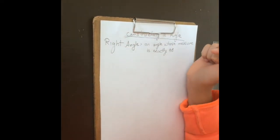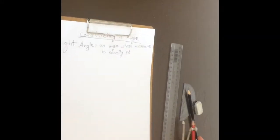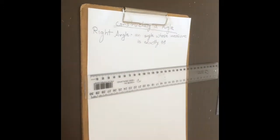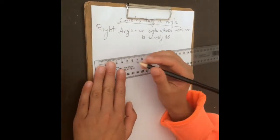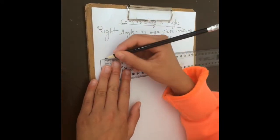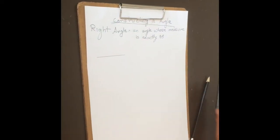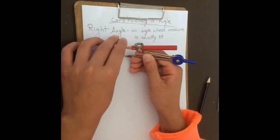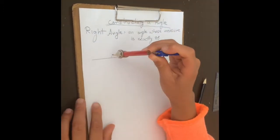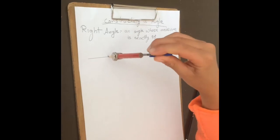Hello guys, so today I'm going to tell you how to construct an angle. First of all I'm going to tell you the basics, which is very important. Rule a line — make sure it's not that big, make it small. I'm going to start off the basics with the right side right here.